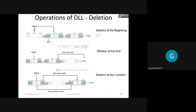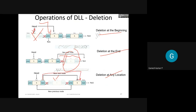For deletion in DLL, there is deletion at the beginning, end, and any location. Deletion at the beginning: the node pointed as head is deleted and head now points to the next node of the first node. Deletion at the end: the tail node is deleted and the tail pointer is made null. Deletion at any location: you omit the target node, delete its pointers, and redirect the surrounding pointers to maintain the list.